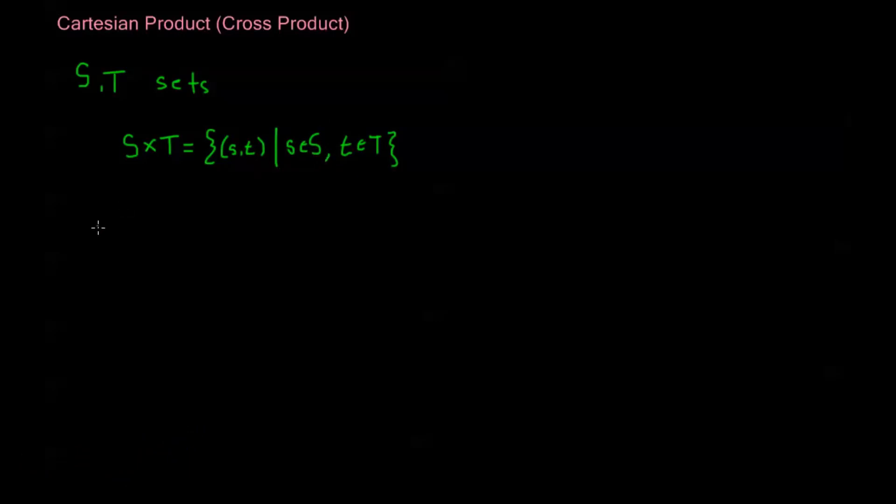So let's go ahead and give an example of what this means. Let's say I have some set S is equal to {1, 2}, and some set T is equal to, say, {1, 2, 3}.